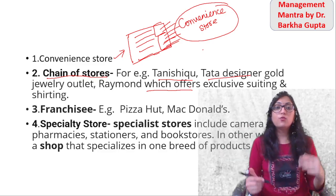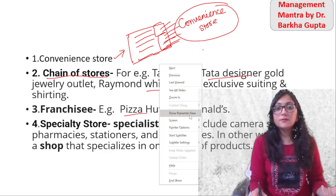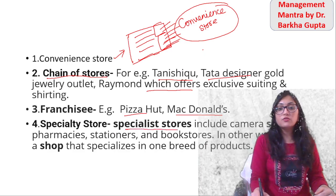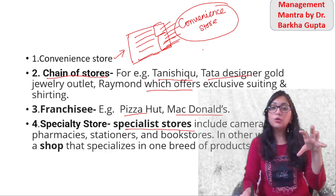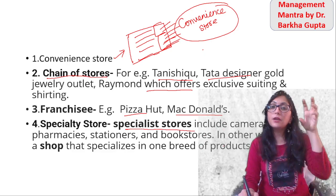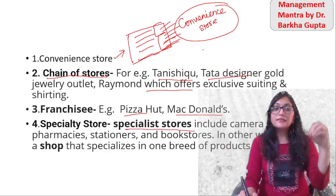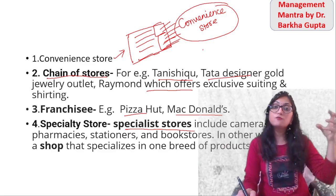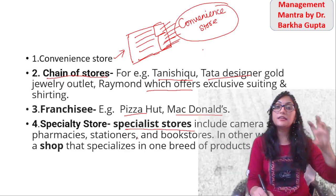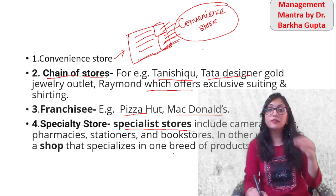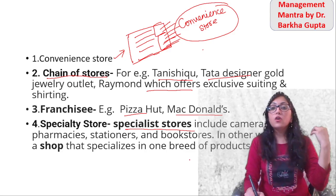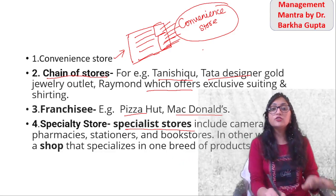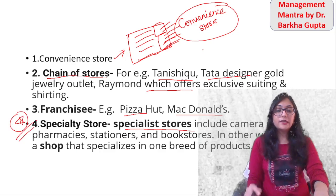There are also chain stores — franchises just like Pizza Hut or McDonald's. Specialty stores are where you have a particular shop for particular things. Like a pharmaceutical company — you have a medical shop, you will get medicine. Sports shop — you will get sports items. Stationery shop — you will get stationery. Book stores — you will get books. If there are pet stores, you get pet-related things. Specialty store is specially for special things.